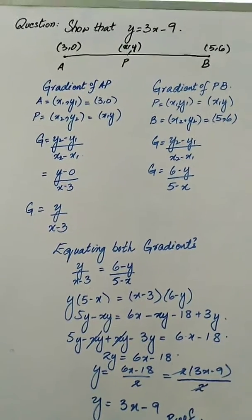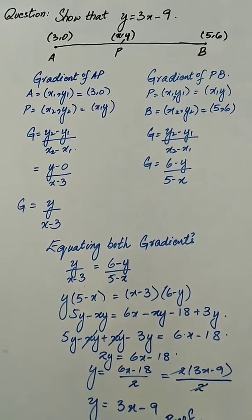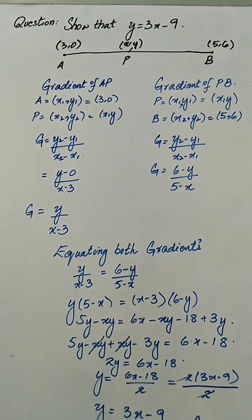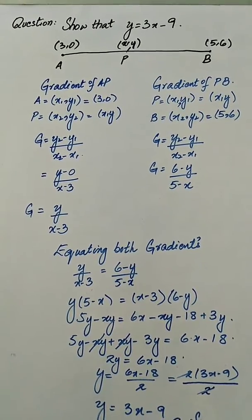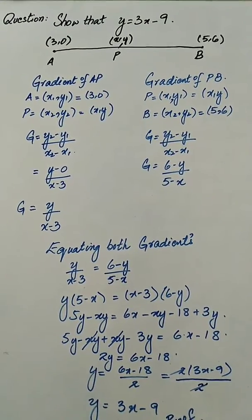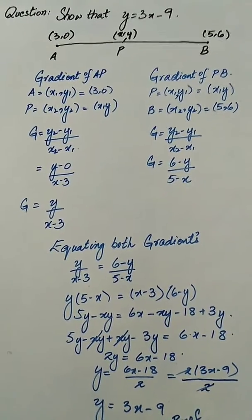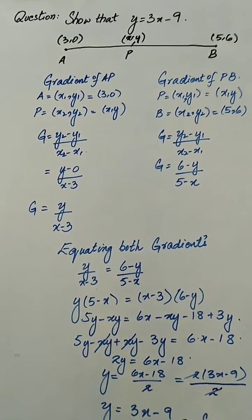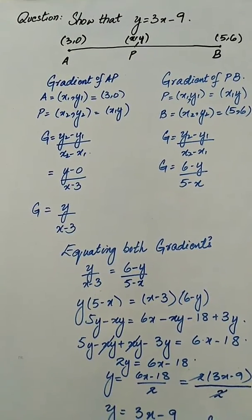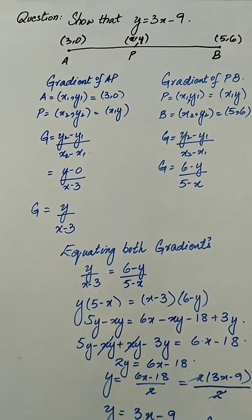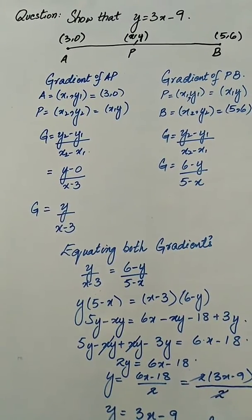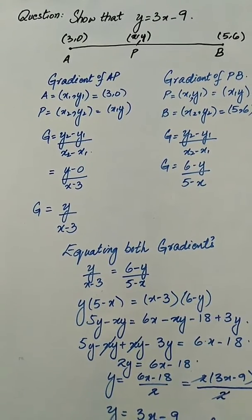Here we have another question in which we have to show that y = 3x - 9, and the coordinates of A, P, and B are given as A = (3, 0), P = (x, y), and B = (5, 6). In order to prove this, we will find out the gradient of AP and PB. For gradient of AP: A is x1, y1 = (3, 0) and P is x2, y2 = (x, y). Putting these values into the formula, we have (y - 0) / (x - 3), so the gradient is y / (x - 3).